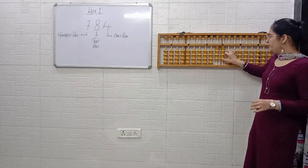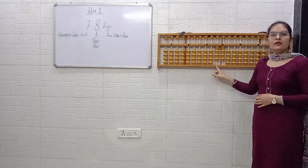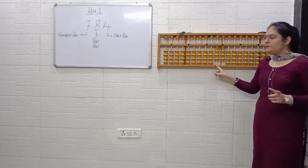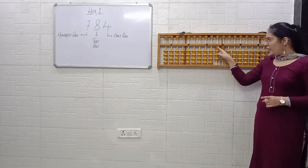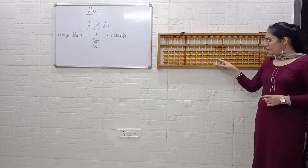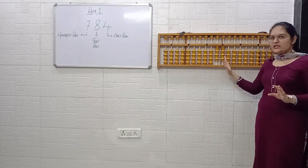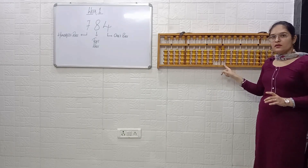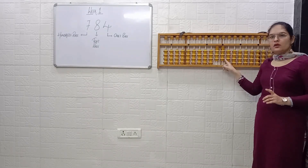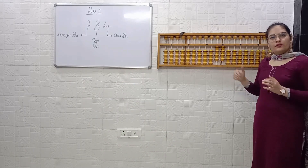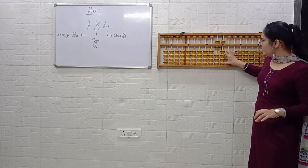Next example — tell me the answer. First read the tens place: 1, 2, 3, 4. Keep that 4 in your mind. Move to the ones place — here also it is 4: 1, 2, 3, 4. So it is 4, 4 — that is 44.